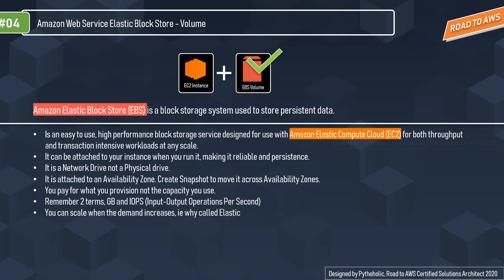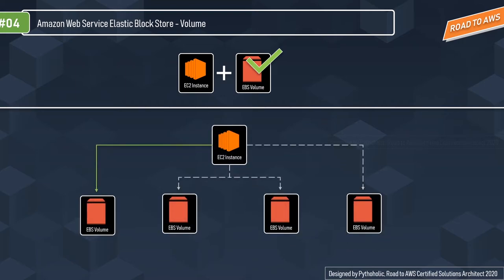You can create snapshots to move EBS across availability zones, and you pay for what you provision — not the capacity you use. So if you provision 10 GB, you pay for the whole 10 GB. Remember two terms: GB and IOPS — Input/Output Operations Per Second. You can scale EBS when demand increases, which is why it's called elastic. Each EBS volume is independent and can be attached and detached any time, and attached to any other instance as needed.